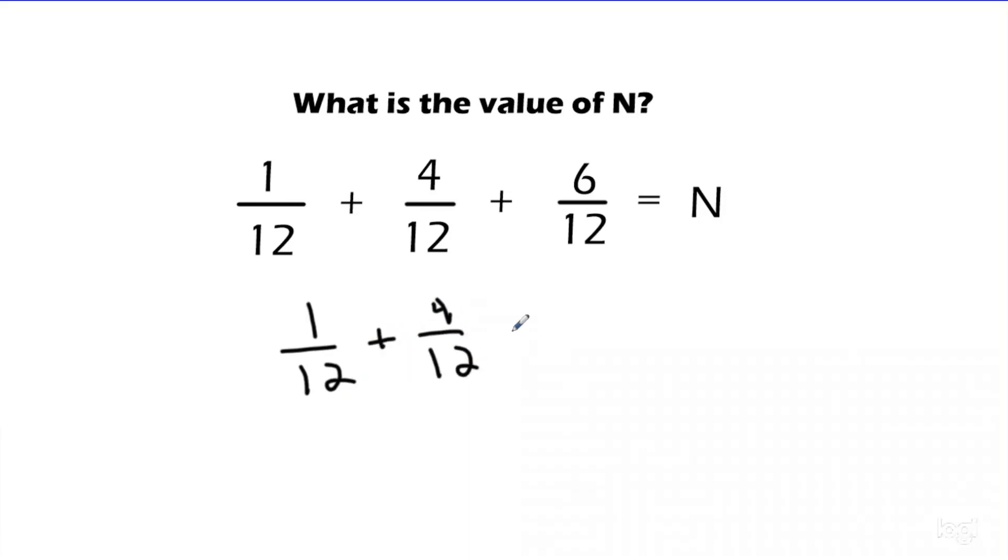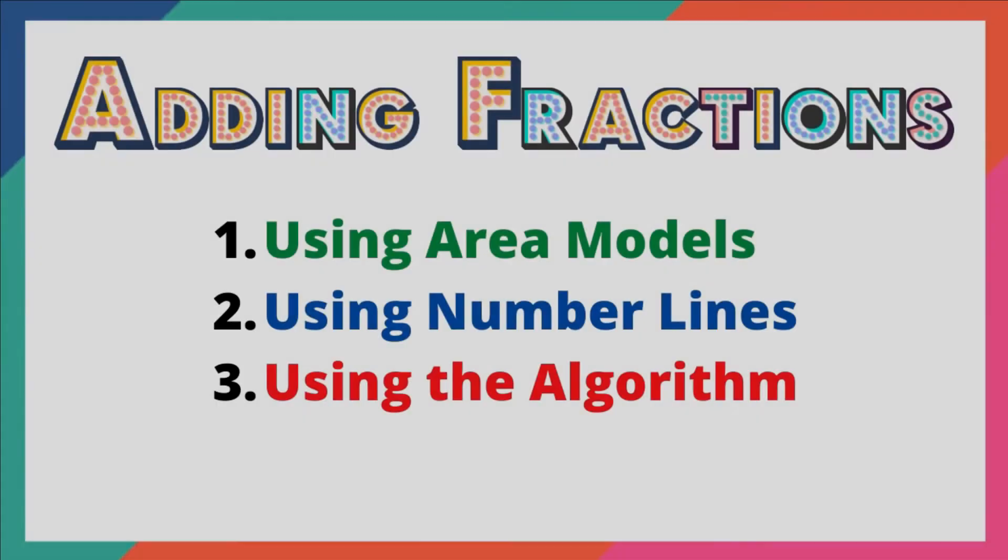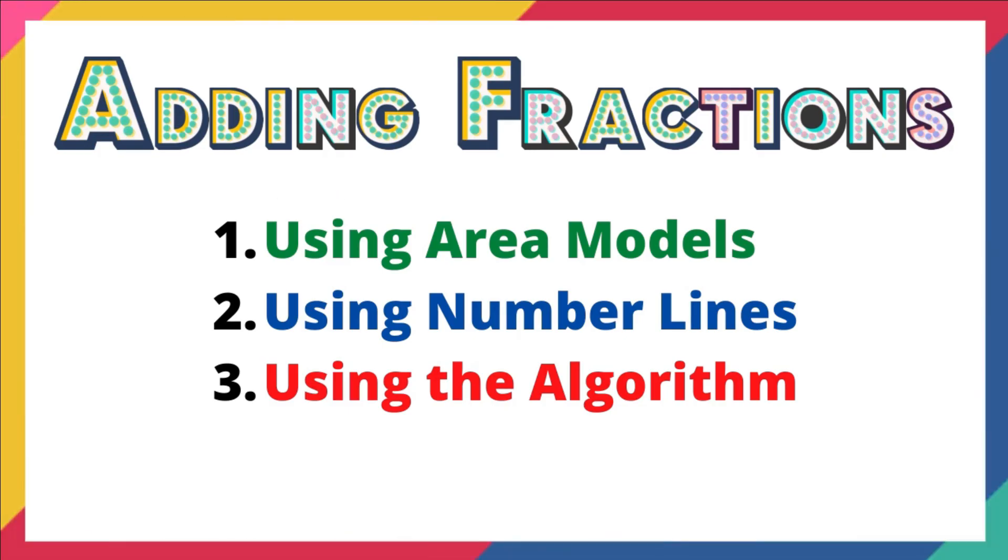This is how most of you guys probably did it, because it is the quickest. I know I'm going to add the numerators. 1 plus 4 is 5 plus 6 is 11. My denominator stays the same. And so N would equal 11 twelfths. Hopefully that was helpful. You saw three different ways to add. Just remember your denominators have to be the same. And then once they are, it's very simple. You just add the numerators and your denominator stays the same.